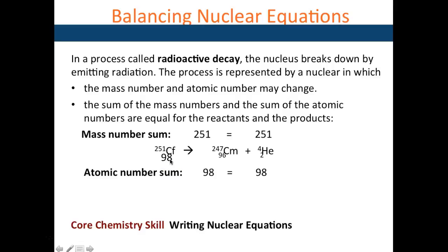Here you have californium undergoing an alpha decay. To identify the new element, 98 minus 2 is 96. Element number 96 is curium, and then its new mass is 251 minus 4, which is 247.